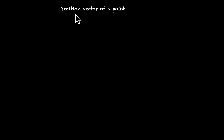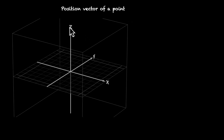In this video, we talk about the magnitude and direction of a position vector. So let's define what a position vector is for a point. Consider this 3D space — we have the x-axis, we have the y-axis, and we have the z-axis.